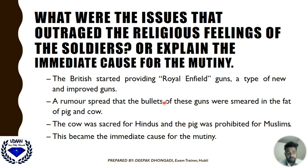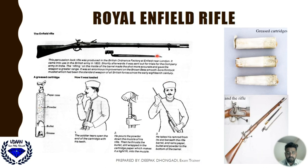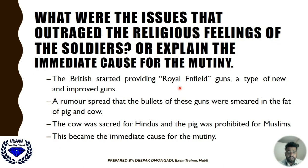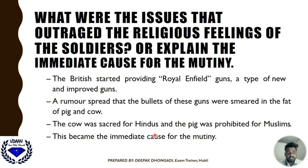A rumour spread that these bullets were smeared with the fat of pig and cow. The cow is sacred to Hindus, and pig is prohibited for Muslims. So both Hindu and Muslim soldiers refused to use the guns. This became the immediate cause for the mutiny — the first war of Indian independence, 1857.